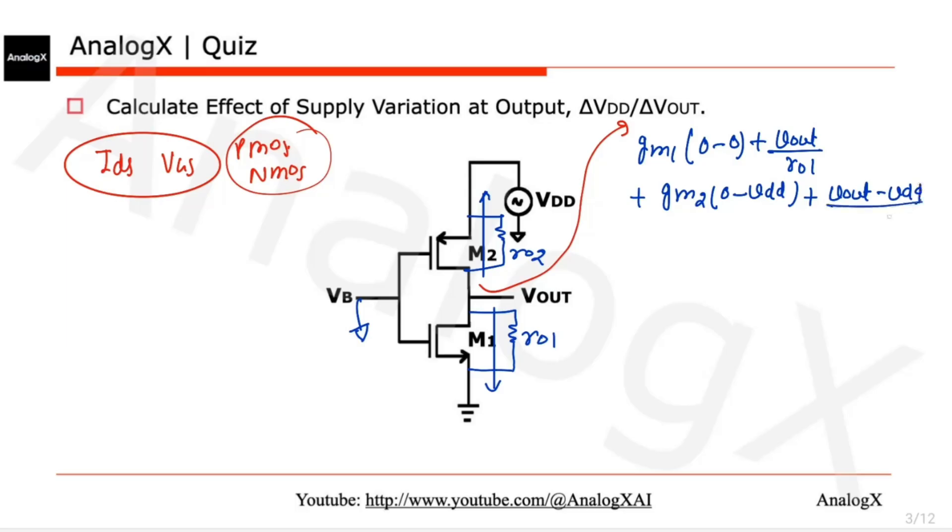Now we will collect similar terms. So VOUT times (1 by ro1 plus 1 by ro2) - that will cancel out - and that will be VDD/ro2 plus gm2.